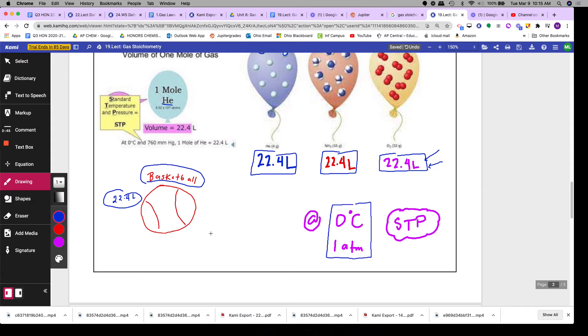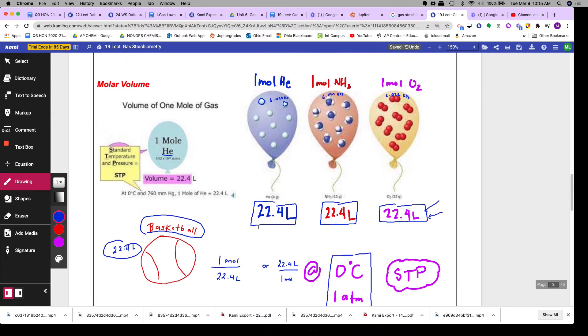Which means 1 mole of any gas is 22.4 liters, or 22.4 liters of any gas is 1 mole. So you can use this in your stoichiometry as a shortcut. Let me show you how to do that.